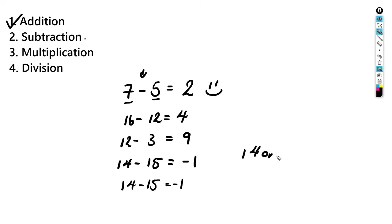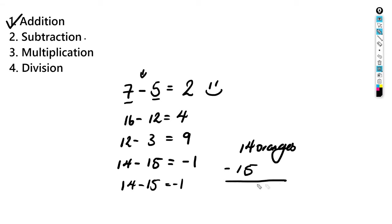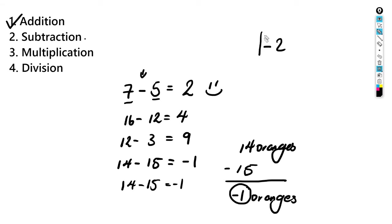Suppose you have fourteen oranges and your mom calls and says she needs fifteen. You give her the fourteen oranges and you still need to find the fifteenth, so you're at negative one orange. You'd have to go outside and pick another orange or go to the store. That's how we get negative numbers — when we're in a deficit, meaning we owe someone something. Think of negative numbers that way. Alright, let's move on to multiplication.